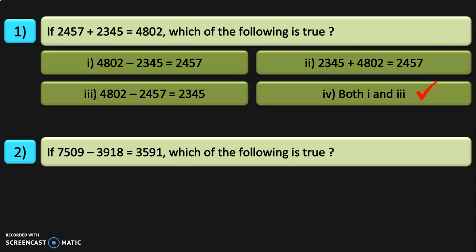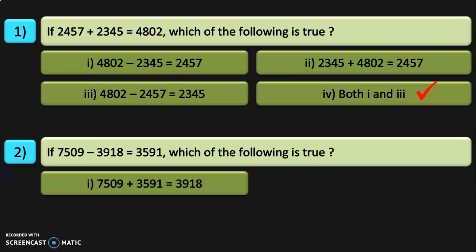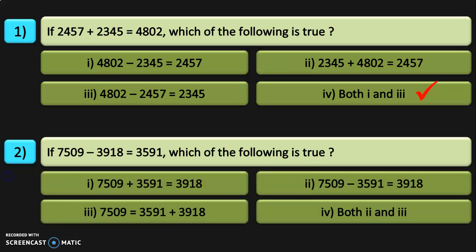Next question: if 7,509 minus 3,918 is equal to 3,591, which of the following is true? Both 2 and 3 are correct — that is, 7,509 minus 3,591 is equal to 3,918, and 7,509 is equal to 3,591 plus 3,918.